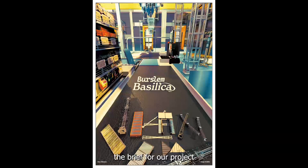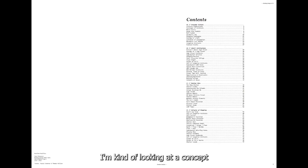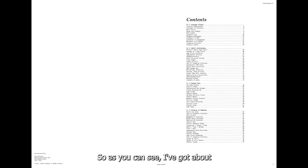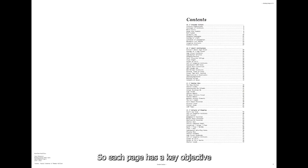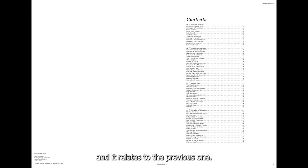To begin with, the brief for our project was Future Ruins, and essentially we could take this any way we wanted. I took it in the sense of starting with archaeology and looking at a concept within the future and how this might be perceived in terms of architecture. I've got about a total of 77 pages — a kind of average size portfolio — and I've really tried to distill most of the elements within each page. Each page has a key objective and leads on to the next one and relates to the previous one.